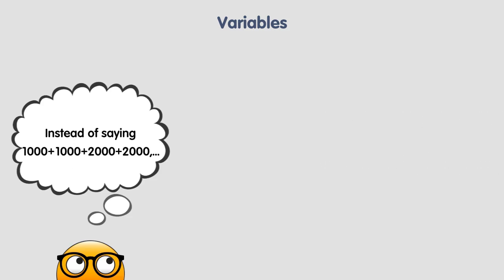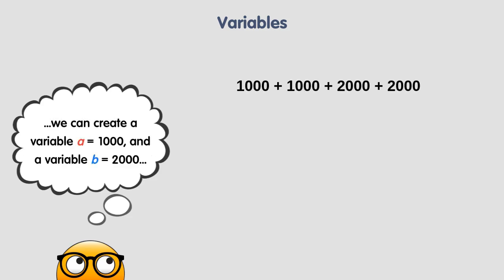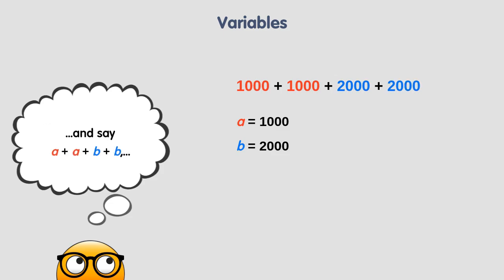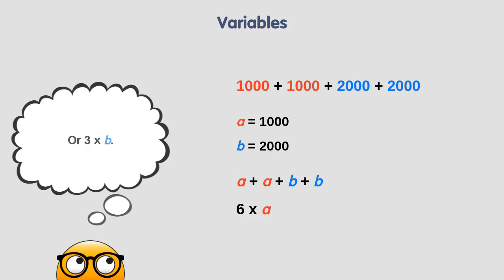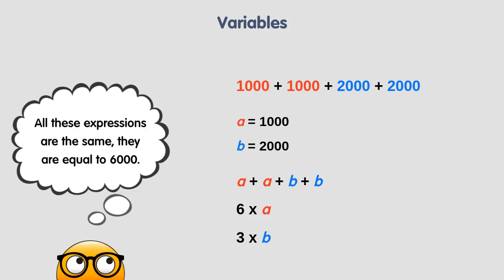For example, instead of saying one thousand plus one thousand plus two thousand plus two thousand, we can create a variable 'a' equal to one thousand and a variable 'b' equal to two thousand, and say a plus a plus b plus b. We can even write a shorter expression: six times a, or three times b. All these expressions are the same — they are equal to six thousand.